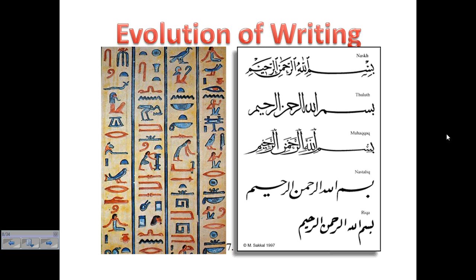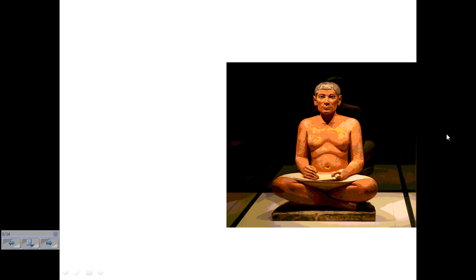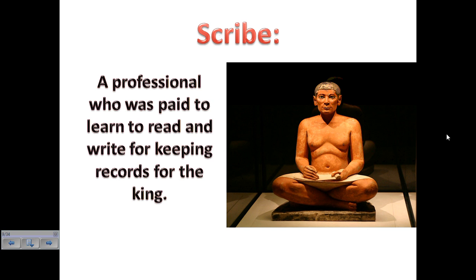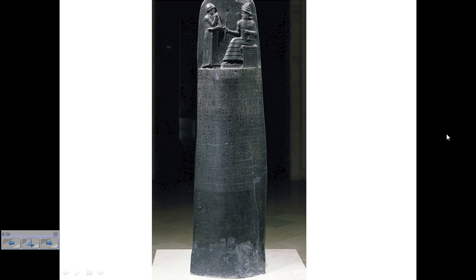Along with cuneiform, we start to see the evolution of hieroglyphics and Sanskrit writing. That takes us to probably the most important person in early civilizations — the scribe. When you're broken into groups and you delegate the writing to the person with the neatest handwriting, it's not too dissimilar from thousands of years ago. A scribe is a professional who was paid to learn, read, write, and keep records for the king — making the scribe very powerful in ancient civilizations.